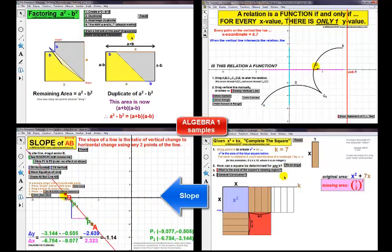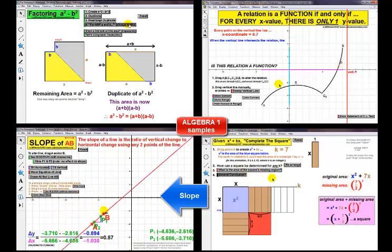Slope values can be positive, negative, close to zero, and infinitely far from it.